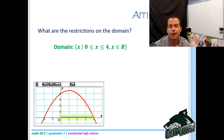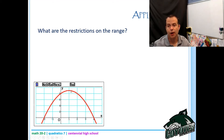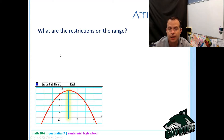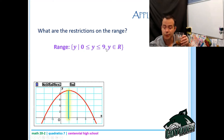Likewise, what are the restrictions on the range? I only care about the height from the water to the highest point the rock reaches. Once it hits the water, it's done — so the meaningful range goes from zero to nine. That's all values of y such that zero is less than or equal to y, which is less than or equal to nine, and y is a member of the reals.